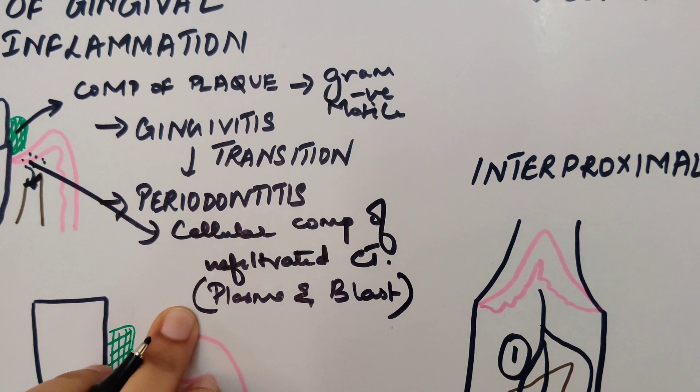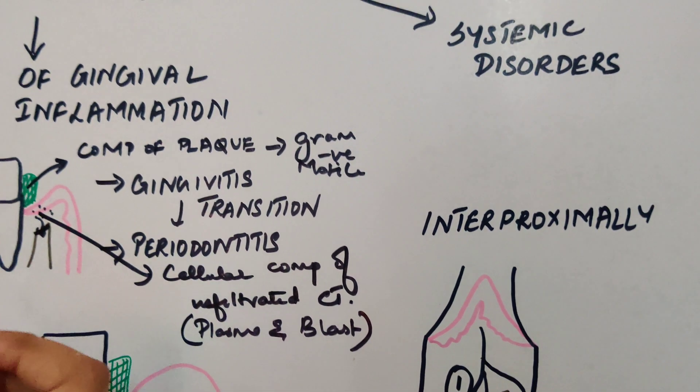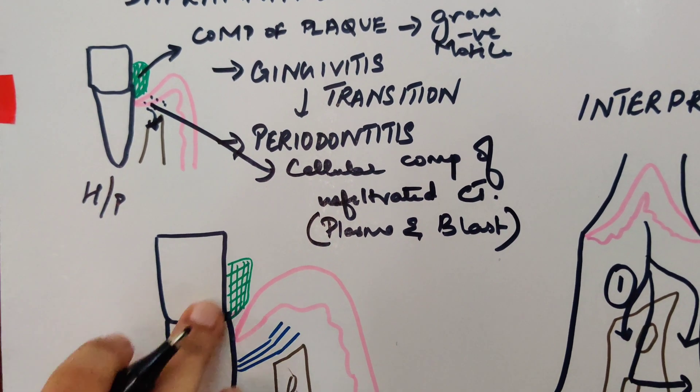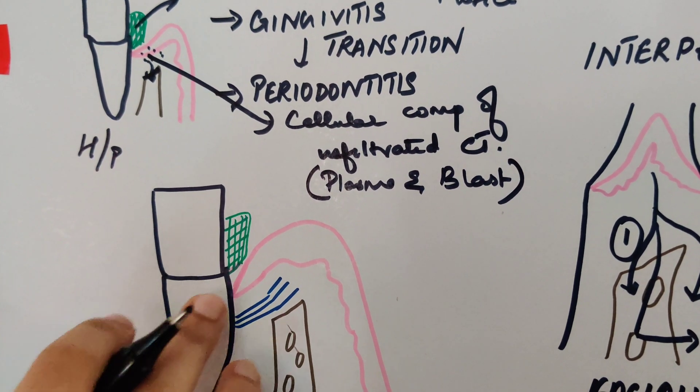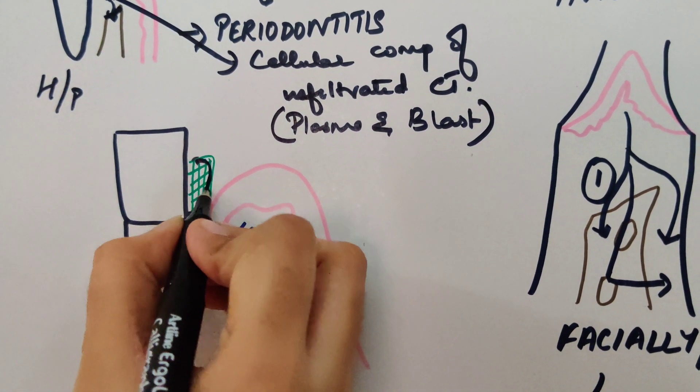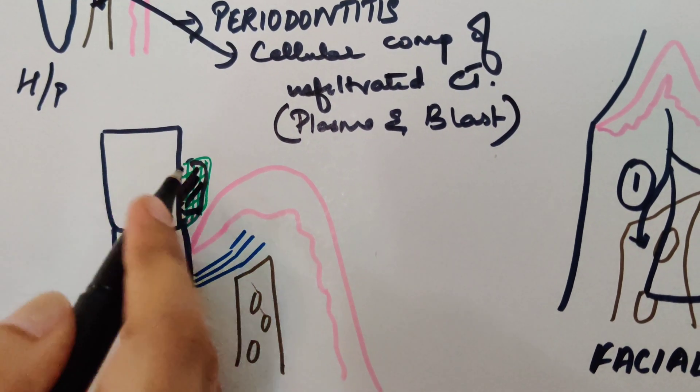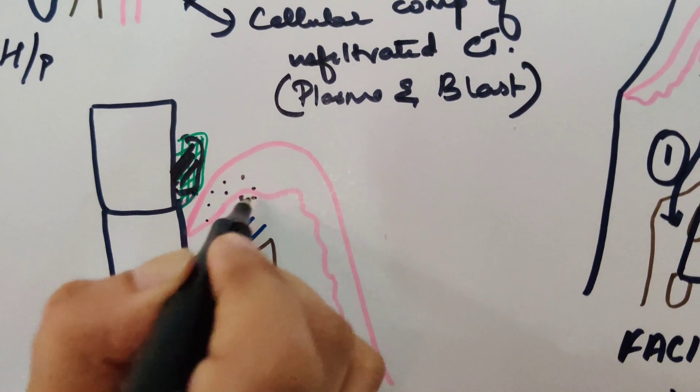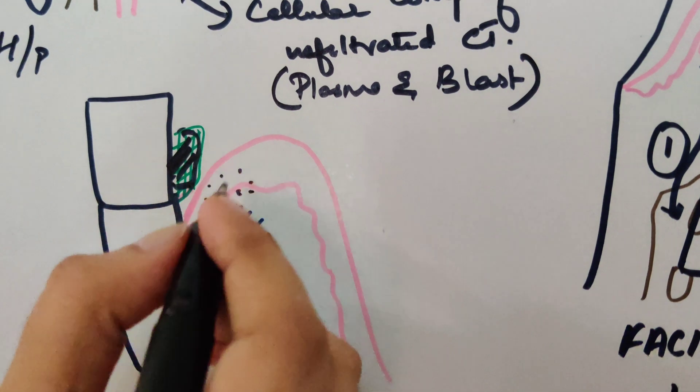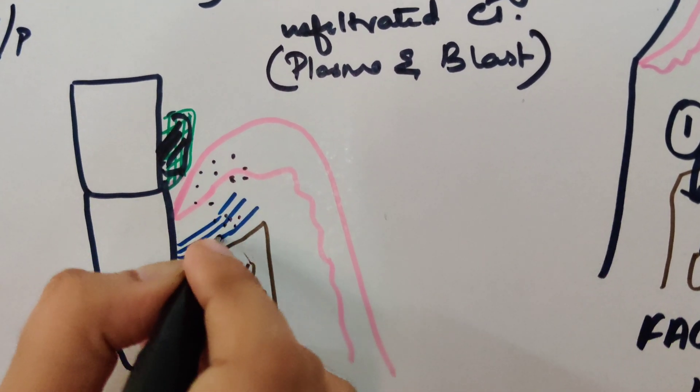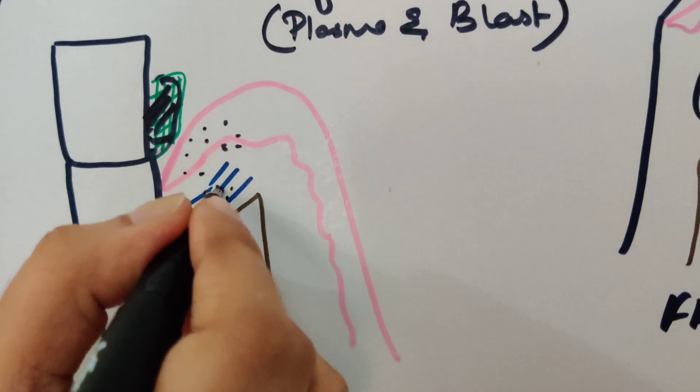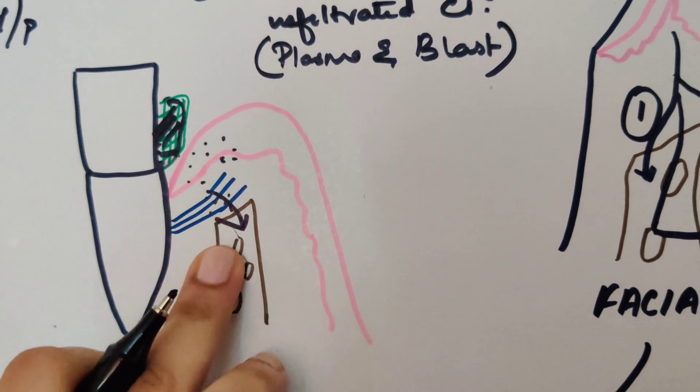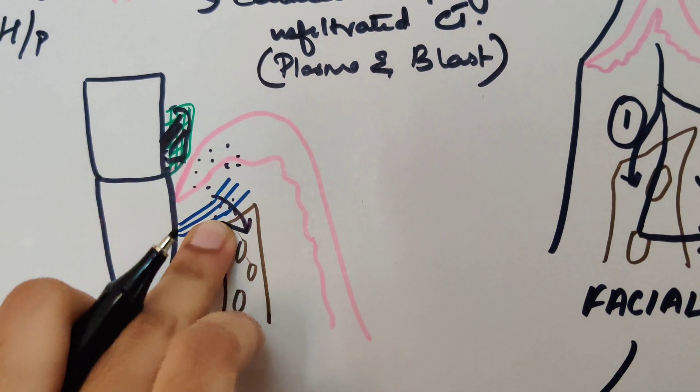Now let's discuss histopathologically how is this happening. How is this causing this bone destruction? First, this is the plaque which is getting accumulated. Once it gets accumulated, what it does is that this will produce the gingival inflammation. Once the gingival inflammation is produced, it extends through the collagen fibers, then it follows the course of the blood vessels and reaches the bone.